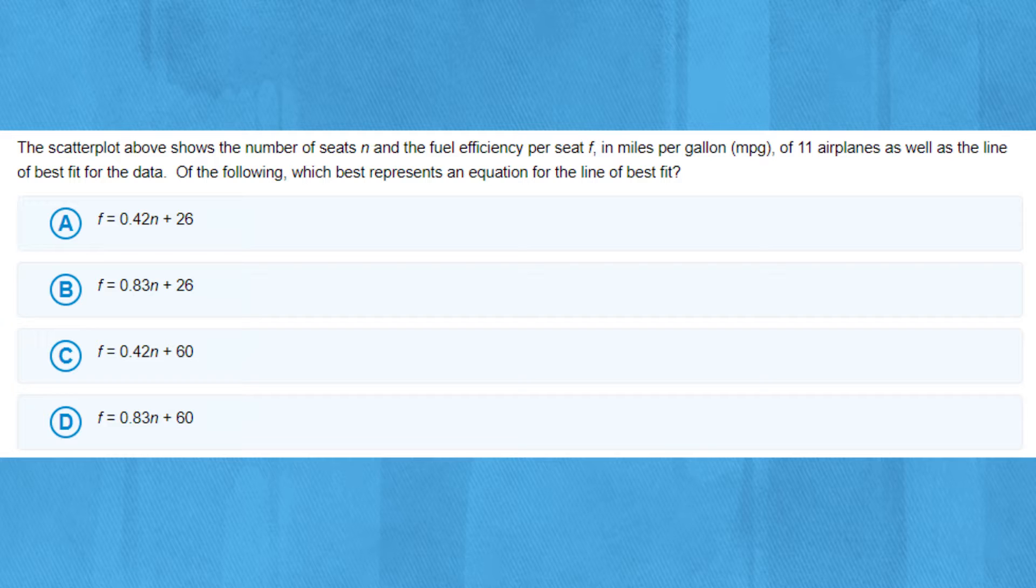The answer choices are: F = 0.42n + 26, B is F = 0.83n + 26, C is F = 0.42n + 60, and D is F = 0.83n + 60.